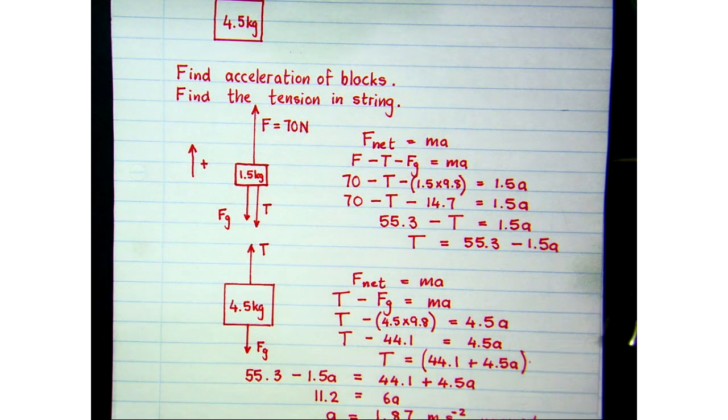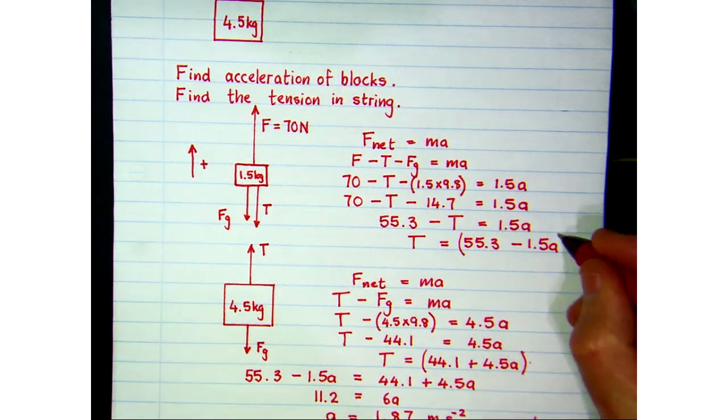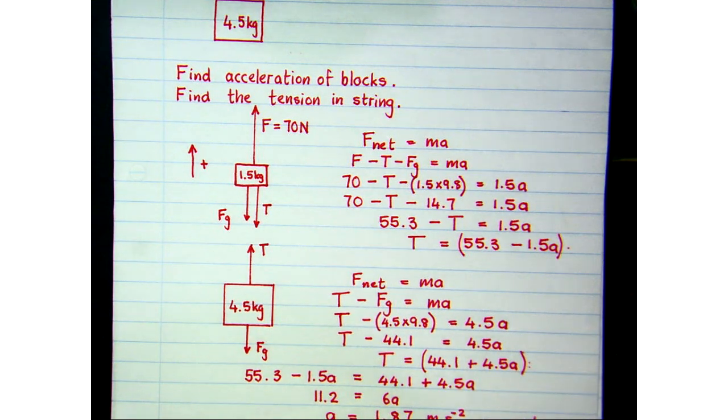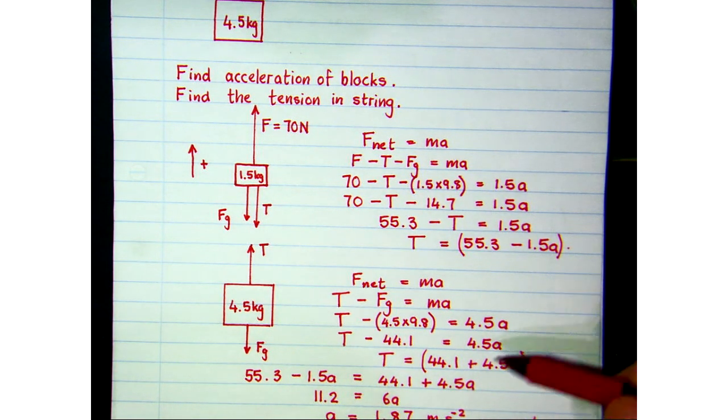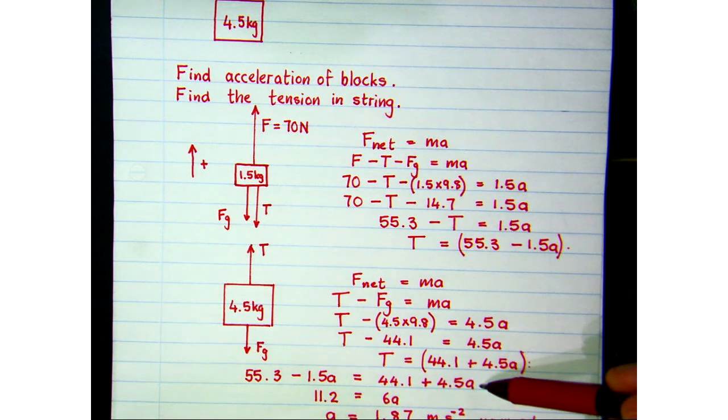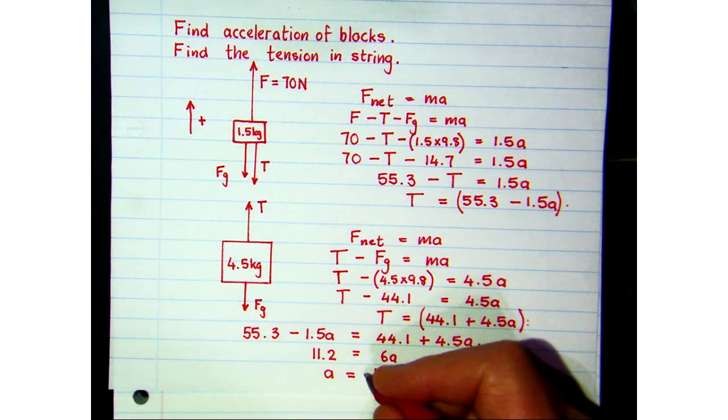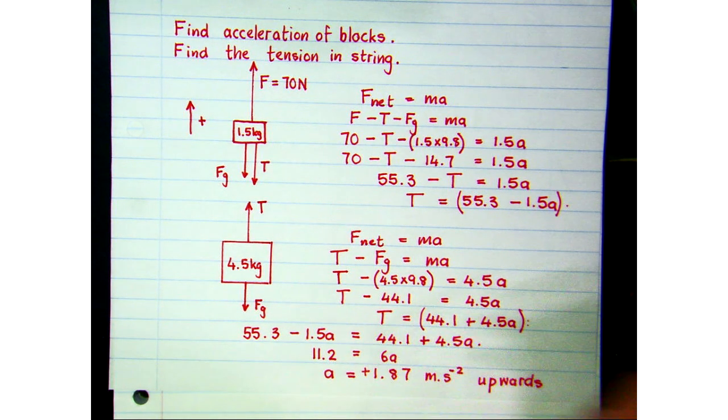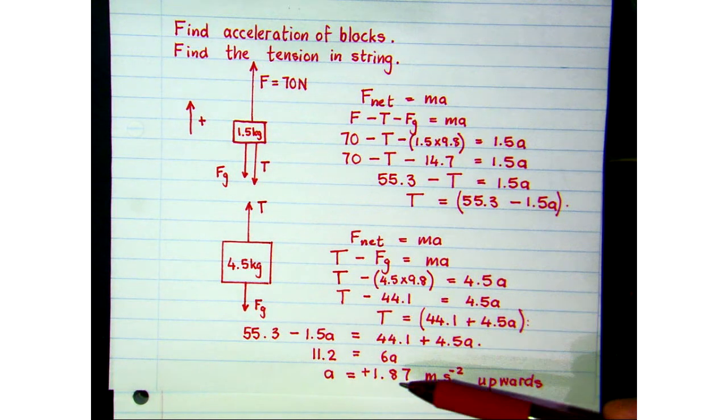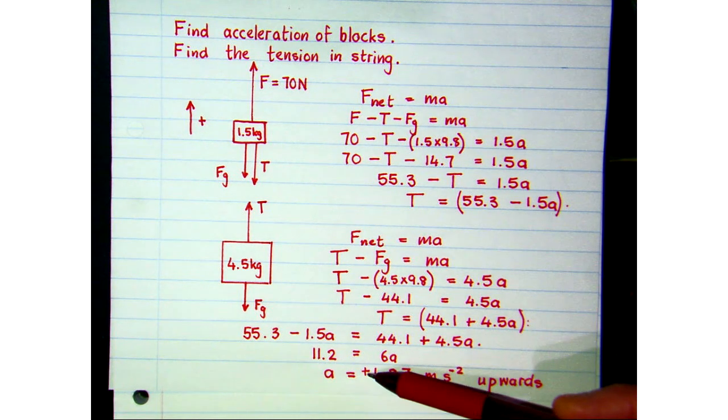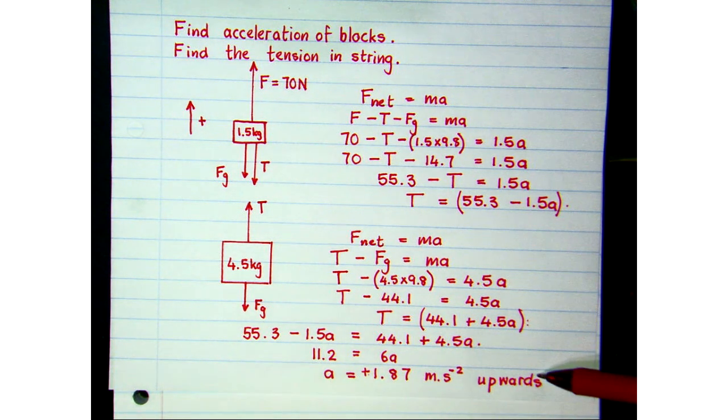So these two expressions here should be equal to each other, and if we set them equal to each other and solve for a, we get an acceleration of 1.87 meters per second squared and it's come out positive. If it had come out negative, then we would have set the accelerations down, but the answer's come out positive so that means that the direction of the acceleration is upwards.